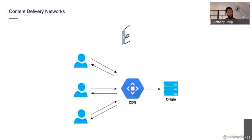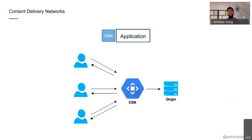A good way to visualize issues with cache is with a CDN. For anyone that doesn't know about CDNs, basically you upload some files and it automatically distributes them geographically close to your users, so your users get a better experience.